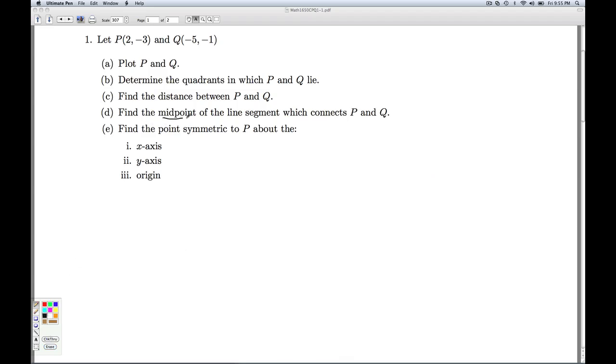Part D, we're asked to find the midpoint of the line segment that connects P and Q. And so we think back, we know that if we have two generic points, P and Q, the midpoint of the line segment which connects them has coordinates halfway over, halfway up. In other words, we average the X values, so we add the X's together, divide by 2.